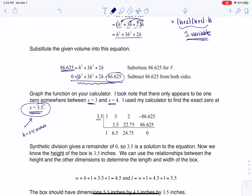I checked it using synthetic division. I put 3.5 here, and then I took my coefficients of 1, 3, 2, and negative 86.625. And you see 1, 3, 2, and negative 86.625. And sure enough, when I ran synthetic division, I did get zero. So this is definitely a zero. But I don't even care about the other factors.